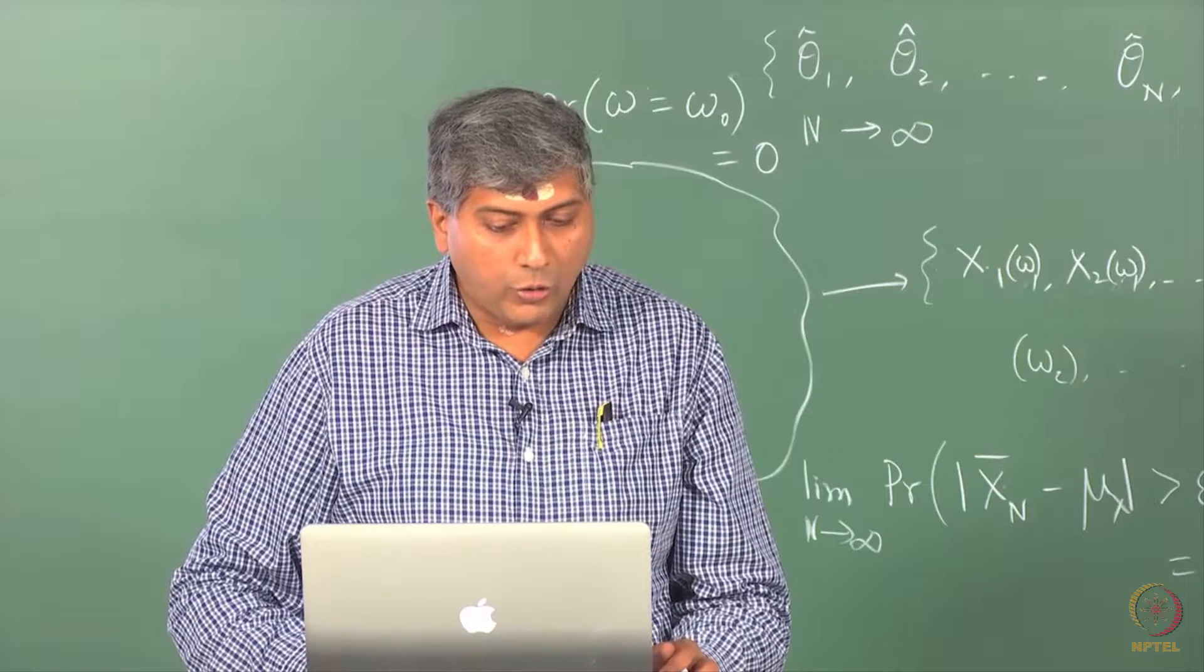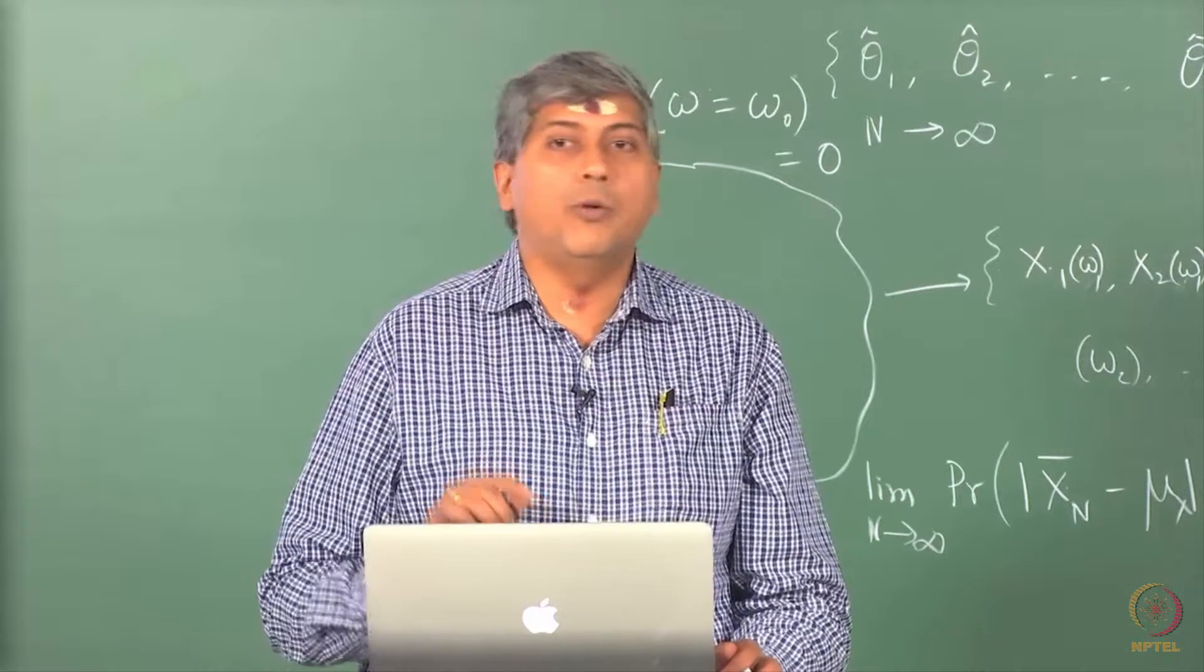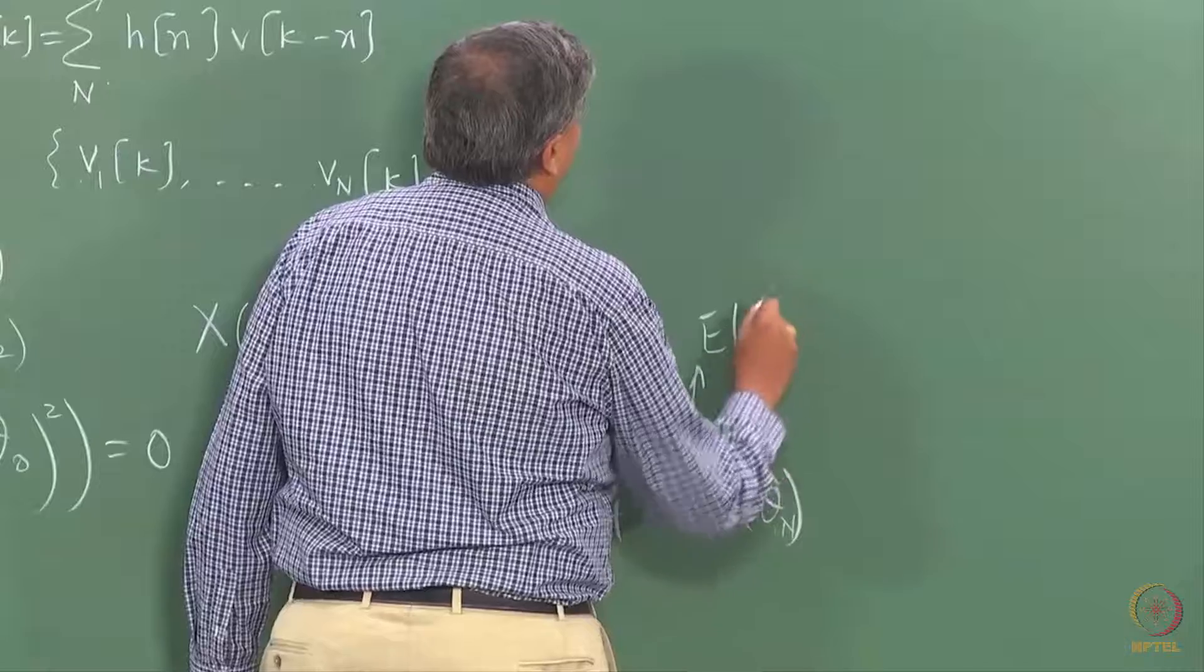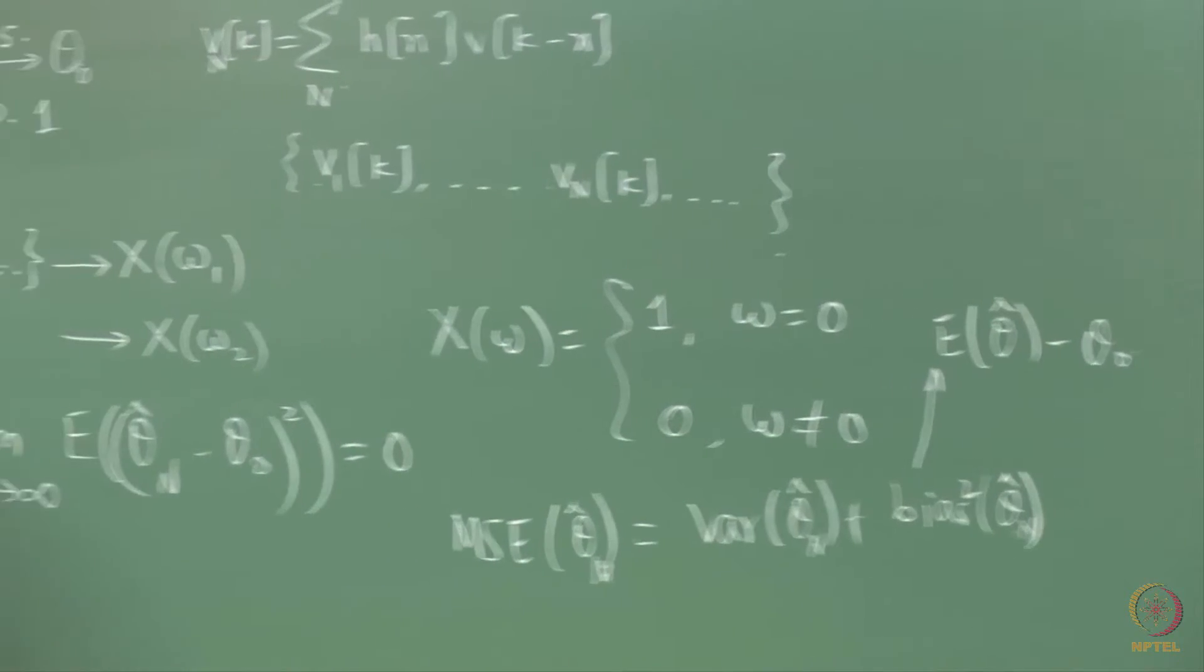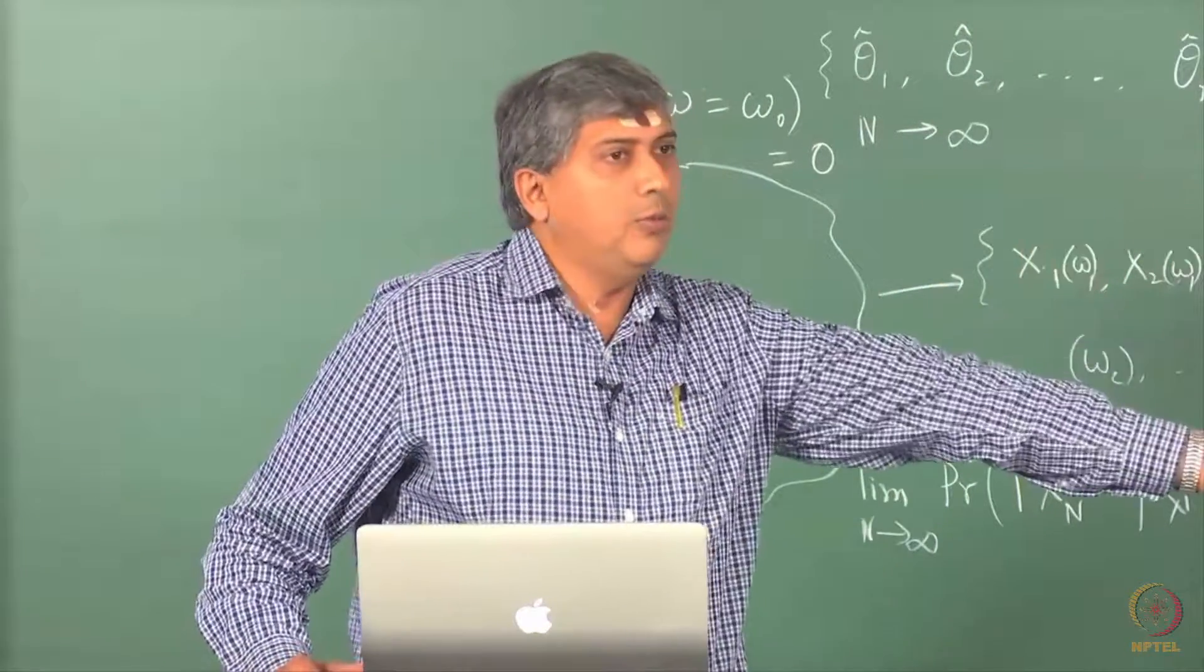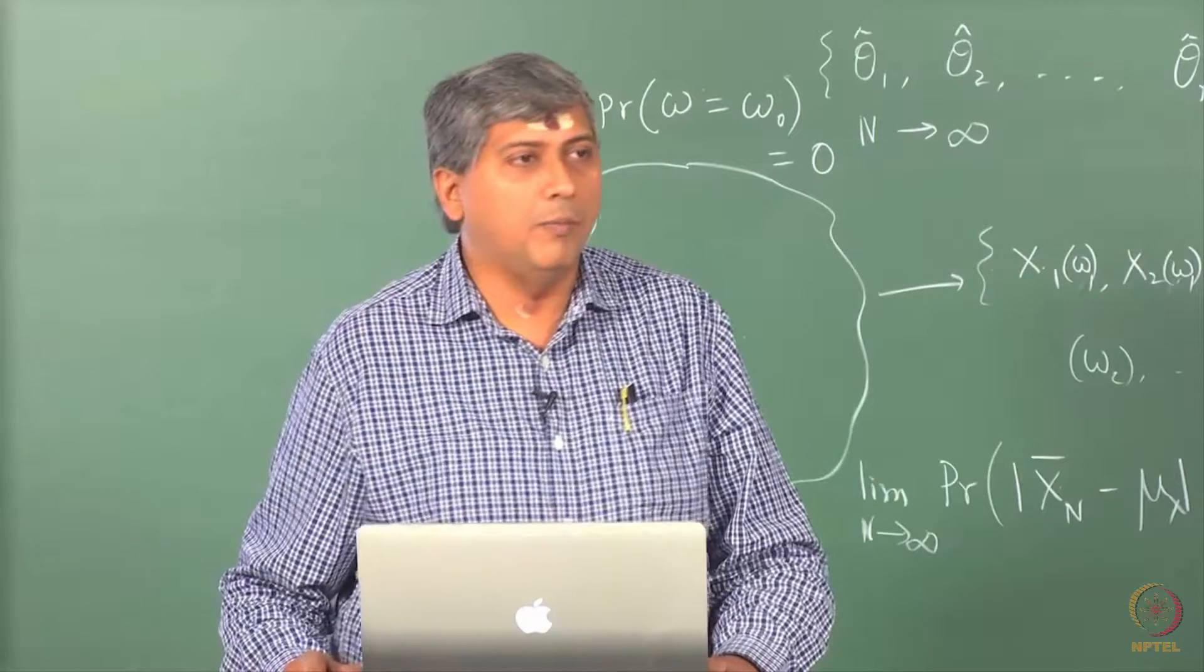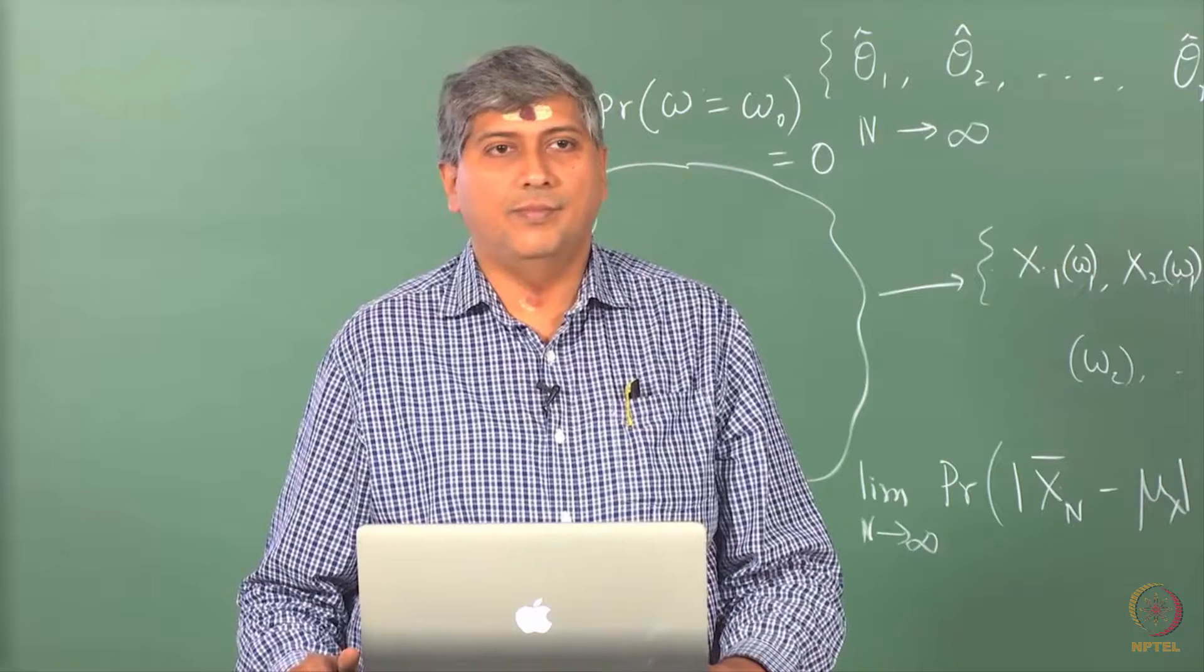Now, the other thing that I wanted to show you through this simulation is computing bias. We have learned how to compute bias theoretically. What is the bias defined as? The bias is defined as expectation of θ̂ minus θ₀. This is your bias. Theoretically, it may be possible for some simple estimators, but increasingly today people are turning to simulations, Monte Carlo simulations. So if you were to be using Monte Carlo simulators to actually compute this bias, how would you do it? What is a simple procedure?